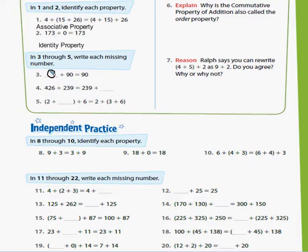Number four, 426 plus 239 equals 239 plus what? And that's the commutative property. That just means you can change the order. So that's 429. I'm sorry, 426.